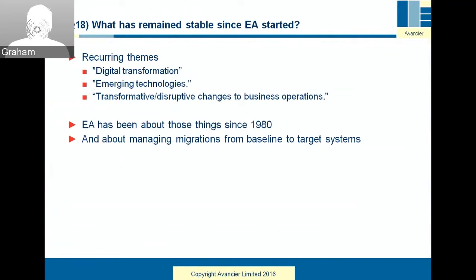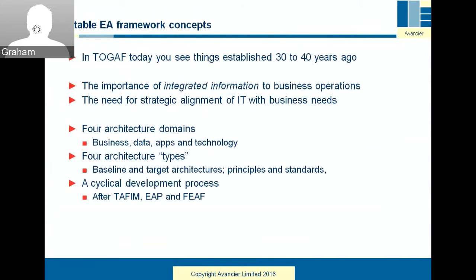What has remained stable since EA started? Although digital transformation, emerging technologies, and disruptive changes are modern speak, enterprise architecture has always been about that. The mainframe was a disruptive technology in the 1970s — it's always been about the change necessary to handle transformations. The things you see in TOGAF, you can see some of them back in the PRISM report and earlier: four architecture domains, four architecture types.